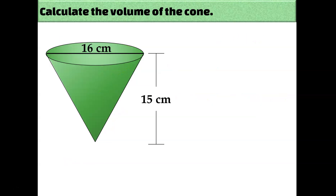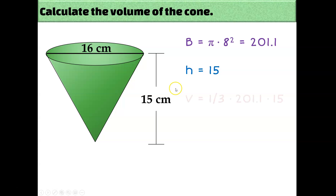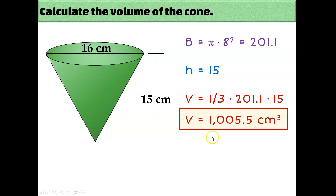In our next example we're given the diameter of the base, so remember to cut that in half when calculating the area of the circle. The base is equal to pi times 8 squared, which is 201.1. This time we've been given the height, so no Pythagorean theorem this time. So we're ready to plug in our numbers — it's one-third the area of the base times the height — and the volume is about 1,005.5 cubic centimeters.